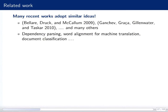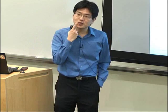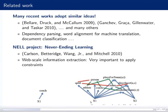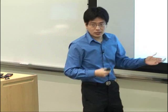There are many recent works that adopt similar ideas. McCallum at UMass and Taskar in 2010 had a paper, and there is a tutorial at ACL this year talking about similar ideas applied to dependency parsing, word alignment, and document classification. There is also a project at CMU called Never Ending Learning, where they try to do web-scale information extraction — for example, learning that Michael Jordan is a player for the Chicago Bulls. They found that if they don't put constraints in their bootstrapping learning procedure, their results are a lot worse, and claim it is necessary to put constraints into the learning process.